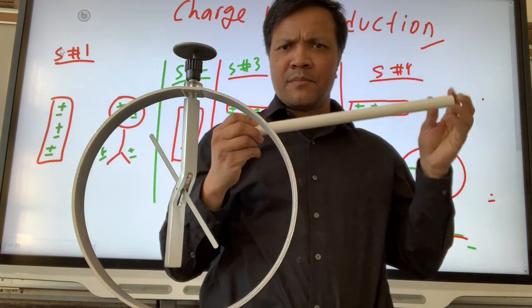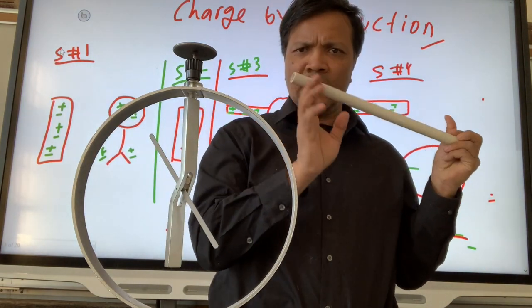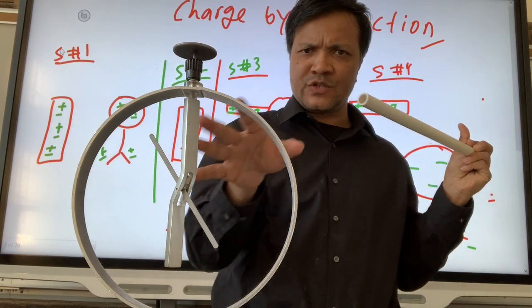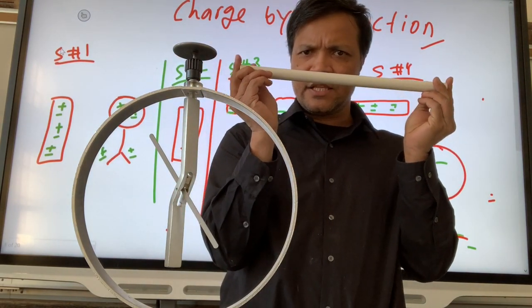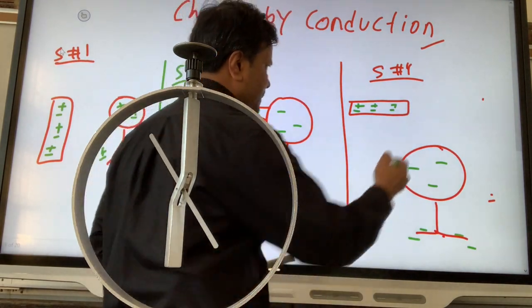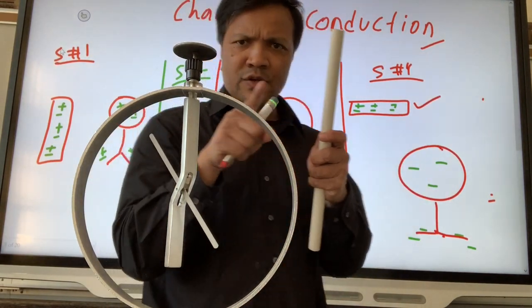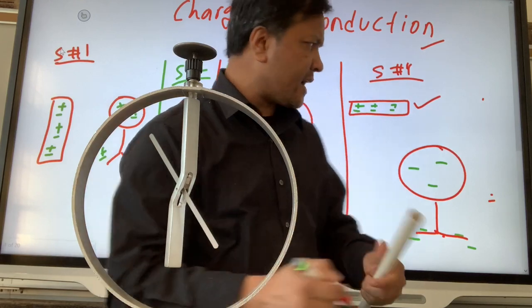This one now becomes neutrally charged because all the extra electrons move to the electroscope, making it neutrally charged. All the electrons move to the electroscope making it negatively charged.